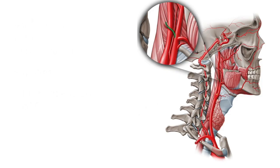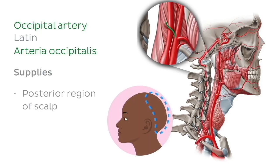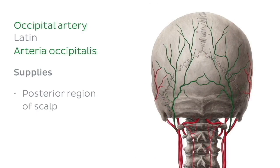The 'O' of our mnemonic is for the occipital artery, which is the fifth branch of the external carotid artery. It travels towards the occiput to supply the posterior region of the scalp. We can see the beginning of the occipital artery here highlighted in green. In this image of the skull from a posterior view, we can get a better idea of its complete path.